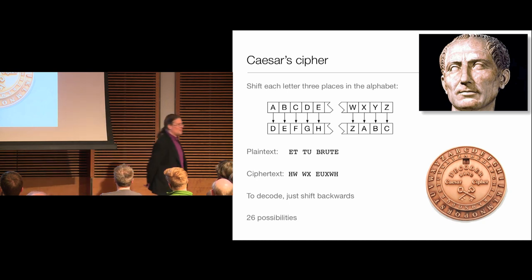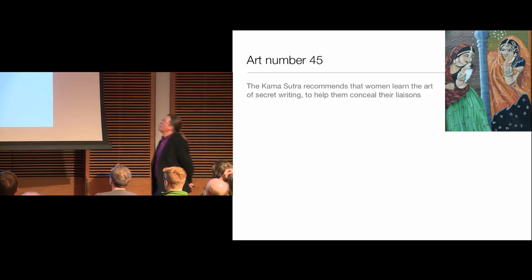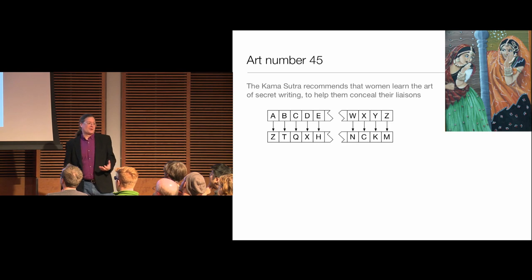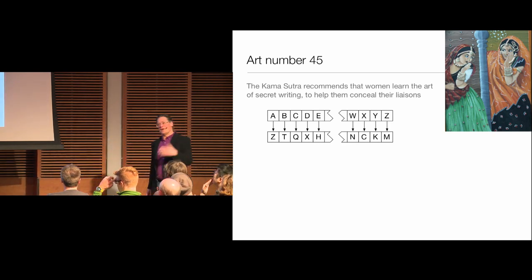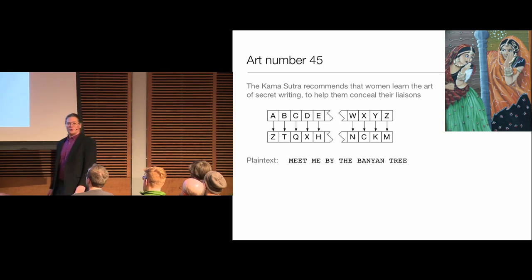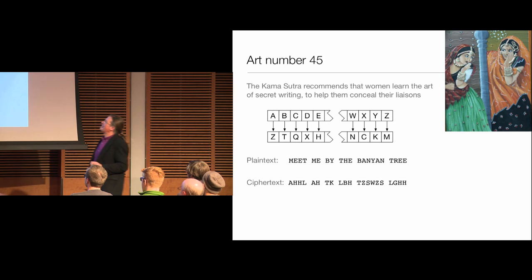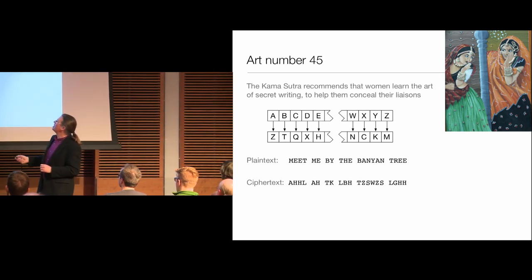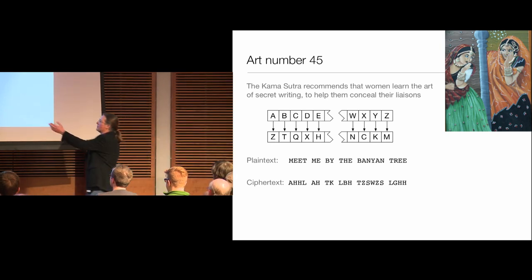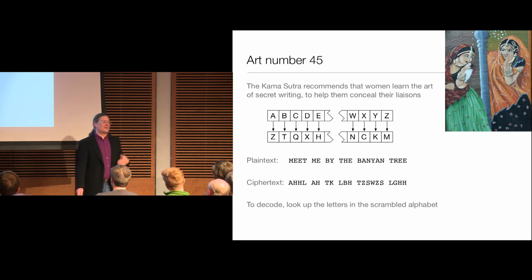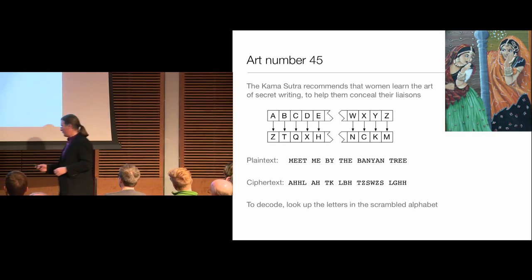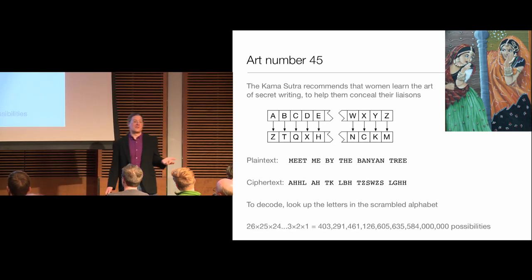If we want a more elaborate cryptosystem, we can follow the Kama Sutra, which recommended that people — especially women — learn the art of secret writing. They recommended a more elaborate code where rather than simply shifting each letter forward in the alphabet, we completely scramble the alphabet. Each letter gets mapped somewhere different. What you and your friend need to share is a copy of the scrambled alphabet; to decrypt the message, you look things up in reverse. The number of possible codes is 26 times 25 times 24 and so on — a nice big number.